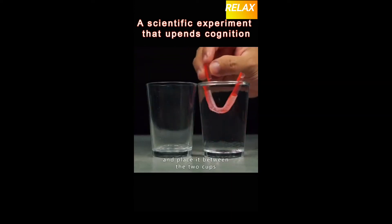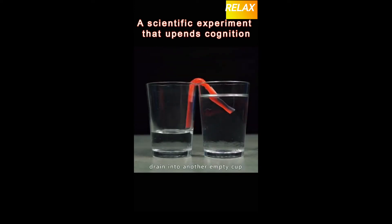Fill the straw with water and place it between the two cups. The water will slowly drain into another empty cup. This is the phenomenon of siphoning.